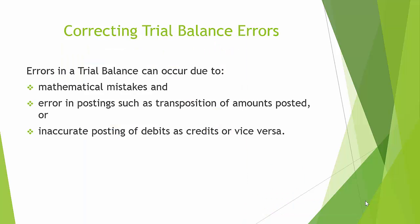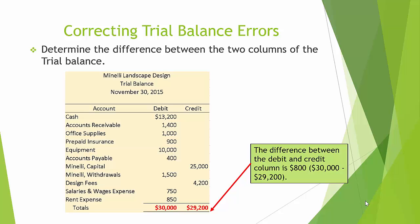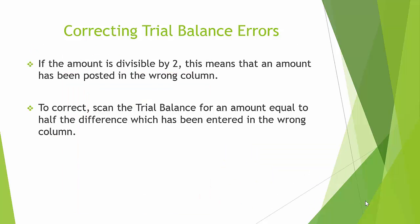Errors in the trial balance can occur due to mathematical mistakes and posting errors, such as transposition of amounts posted or inaccurate posting of debits as credits or vice versa. If the debit and credit columns are not equal, recompute the totals of both columns to eliminate addition errors. Next, determine the difference between the two columns. If the amount is divisible by 2, this means that an amount has been posted in the wrong column.